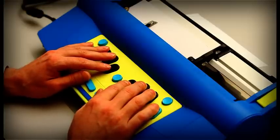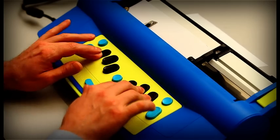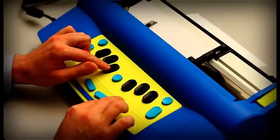dots 2, 3, or enter the number sign dots 3, 4, 5, 6 followed by the letters A through J.